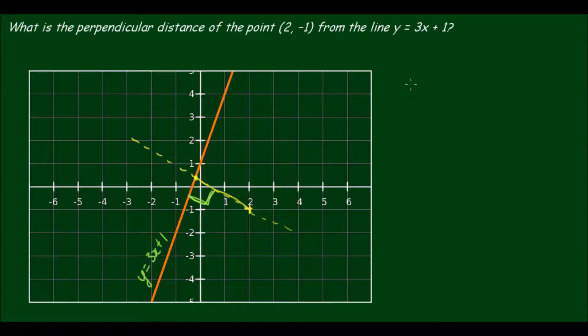Now thankfully there is a formula that we can use to help us solve this problem. Otherwise we would have to resort to some time consuming problem solving. But nonetheless the formula is d equals the absolute value of am + bn + c, divided by the square root of a² + b².